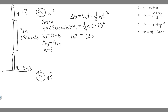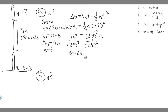Now we divide both sides by 2.8 squared, because we want a by itself. So we do 182 divided by 2.8 squared. When you do that, you get 23.214 and so on — rounding to 23.21. The units for acceleration are meters per second squared, so the acceleration is 23.21 meters per second squared.